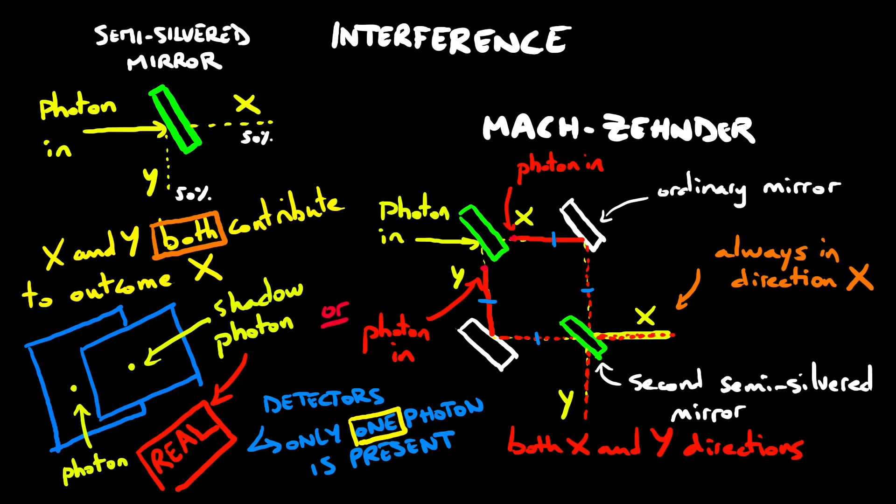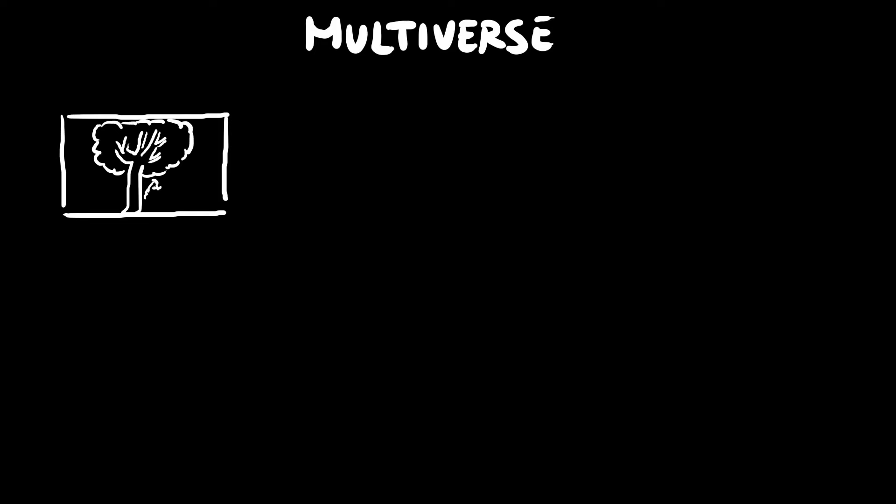There must be at least another universe beside ours where that shadow photon lives. In fact, David Deutsch states that there are uncountably infinite parallel universes. Let's give some precision on the concept of multiverse. Imagine uncountably infinite universes identical in every respect to the one you're living in, including the same laws of physics. We call them fungible.